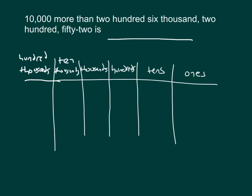It says 206,000, so we'll place 200,000 there. Then we have 206,000, so we'll place those 6 in the thousands place. Hopefully you stated the thousands place. Therefore, we have 206,000, just like is asked here.